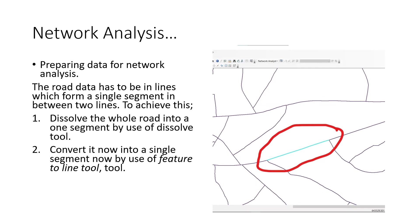The data has to be in lines which form a single segment between two lines to achieve this. As you can see in the image on display, there's a line which is a single segment between other lines — it has to be like that. The analysis would not work correctly if you have two segments between two lines. To fix this, you have to dissolve the whole road into one segment using the dissolve tool.